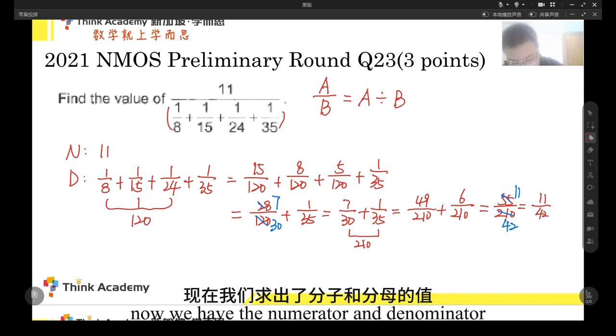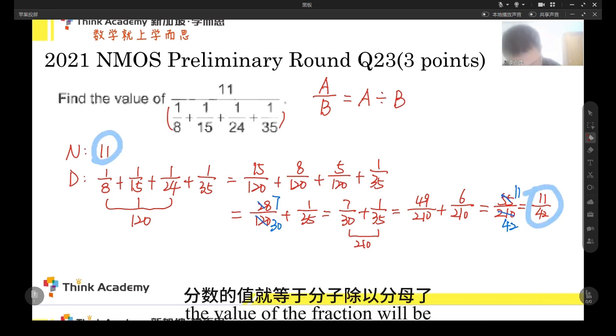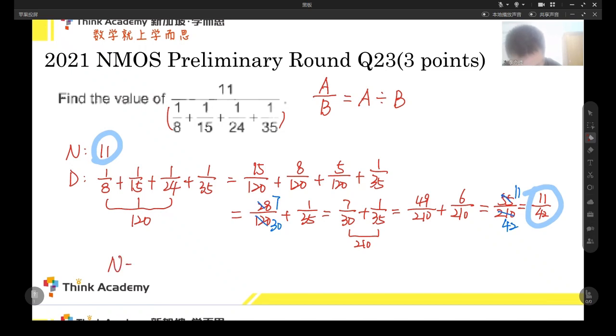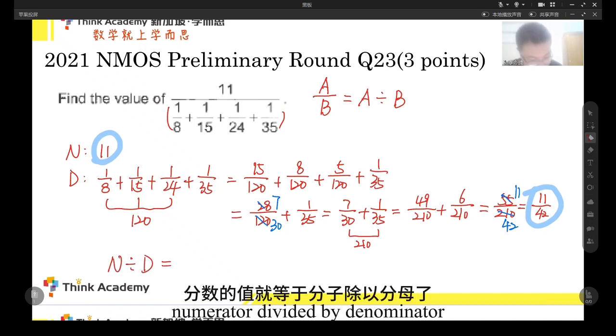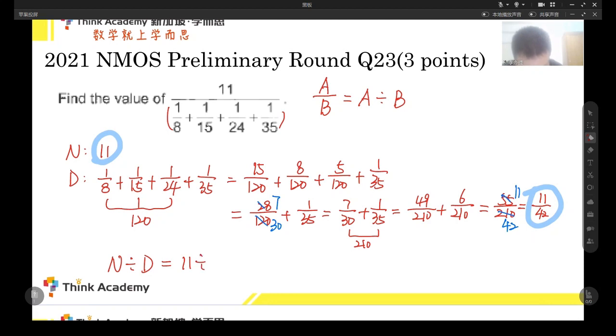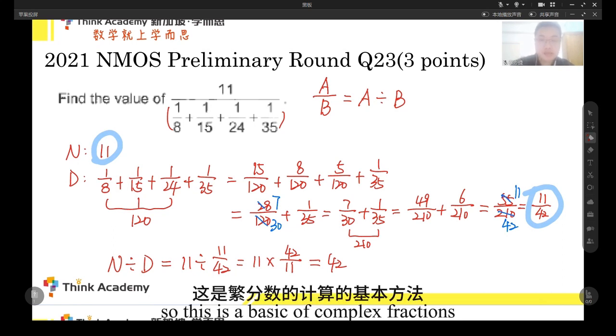Now we have the numerator and denominator. The value of the fraction will be numerator divided by denominator, which equals to the product 11 times 42, right? So this is the basic value of complex fraction value calculating.